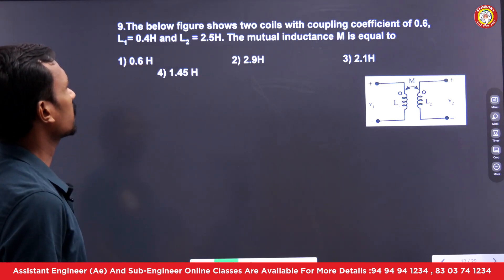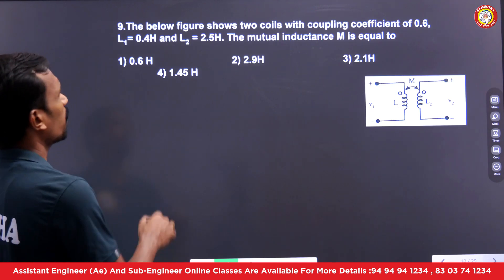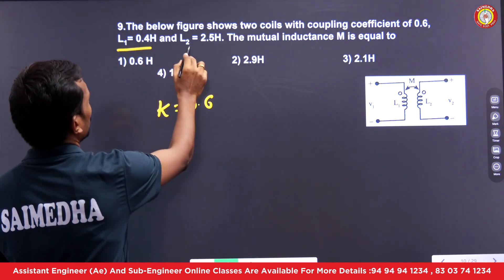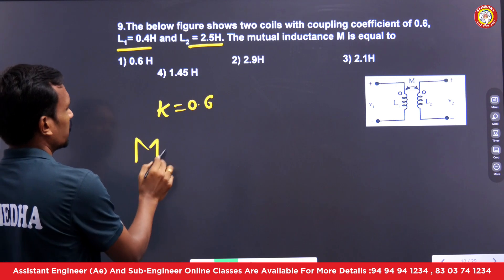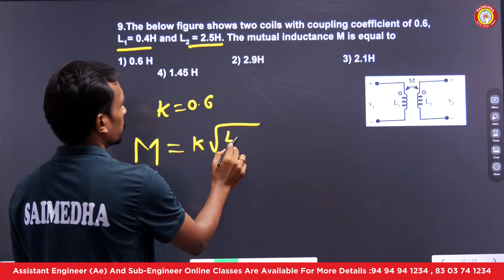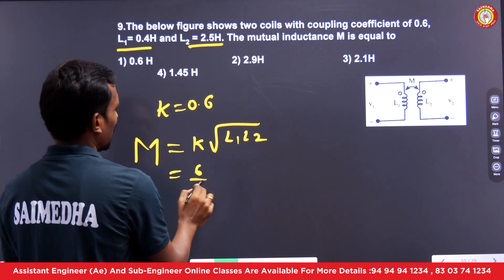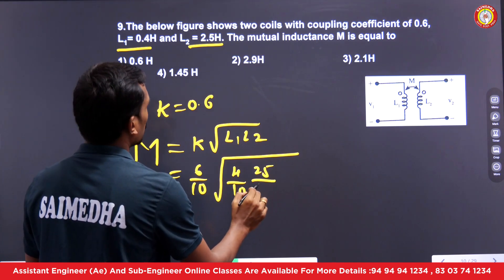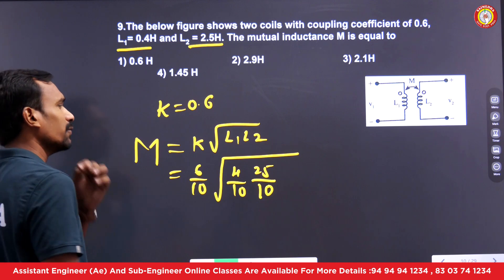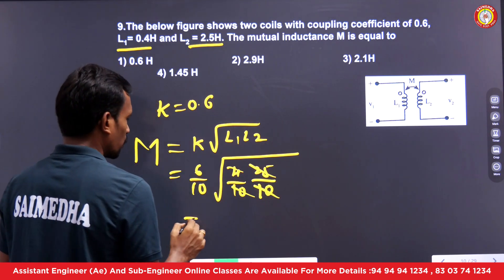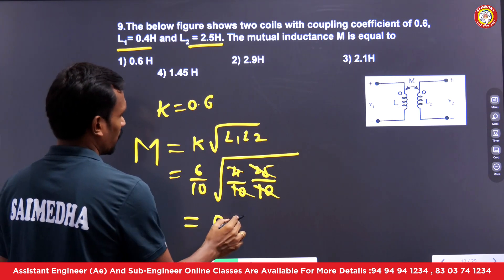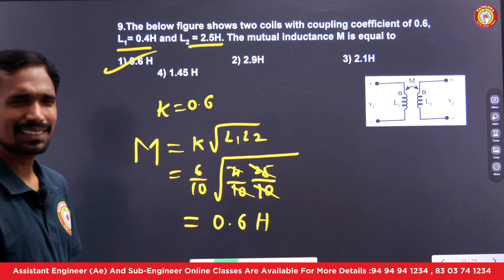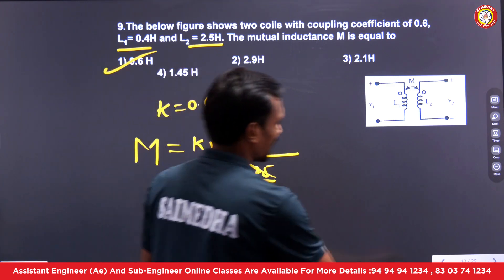Next question: Two coils with coupling coefficient k = 0.6, with L1 and L2 both equal to 100 mH. Find the mutual inductance. The formula is M = k × √(L1 × L2) = 0.6 × √(100 × 100 / (1000 × 1000)) — since L1 = L2 = 100 mH, √(L1·L2) = 100 mH = 0.1 H, giving M = 0.6 × 0.1 — but since units resolve to 1, M = 0.6 H. Simple question.